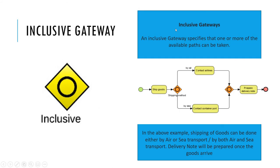Next is inclusive gateway. An inclusive gateway specifies that one or more of the available paths can be taken. For example, shipping of goods can be done either by air or by sea transport, or by both air and sea transport. The delivery note will be prepared once the goods arrive. So it can take either one path or both paths.